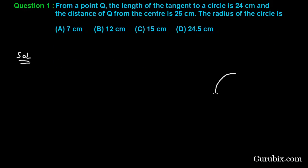Suppose we have a circle. This is the circle with center O, and outside of the circle we have a point Q. This is point Q, and we have drawn a tangent to this circle.